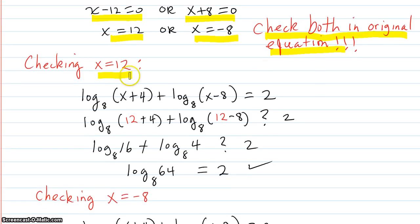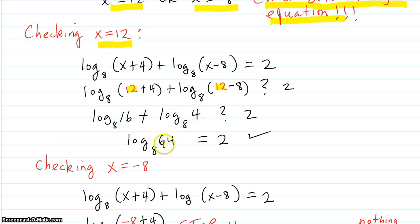So, checking x equals 12. Put the 12 in there for x. Here and here. And put the question mark, because I don't know if it's equal yet. Log 16. Log base 8 of 4. And I still don't know if that's 2. I'll multiply them together. 16 times 4 is 64. Contract these back to a single log. Log base 8 of 64. That is 2, because 8 squared is 64. So, it checks out.